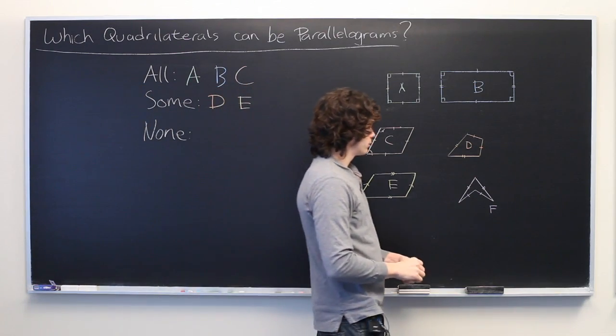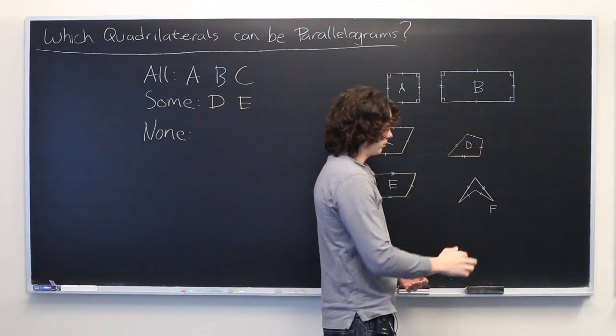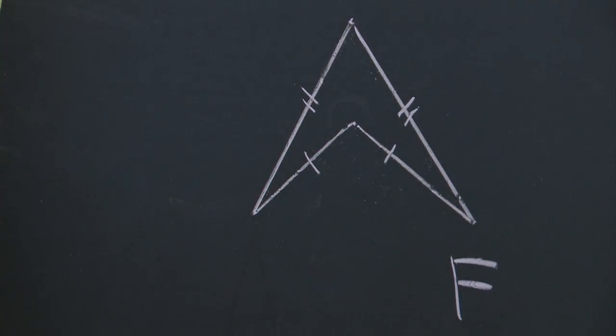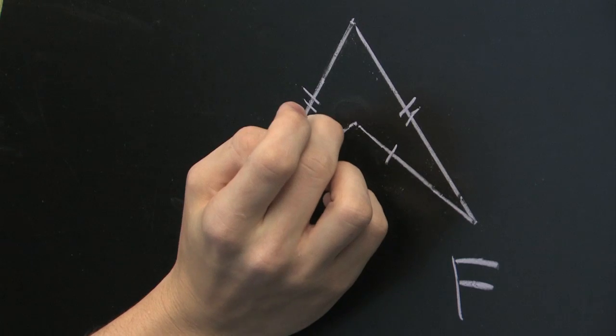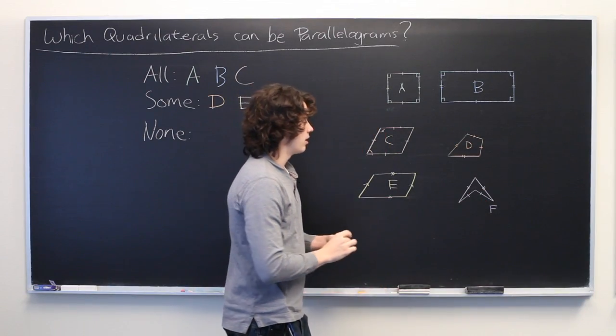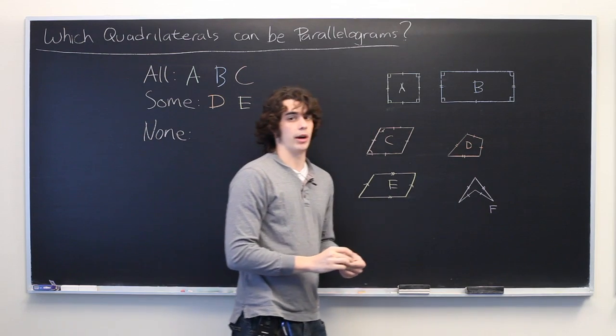Finally, for the chevron. Similar to the kite, adjacent pairs of sides are of the same length. But because of this reflex angle in here, an interior angle which is greater than 180 degrees, it is not possible for any of the sides to be parallel.